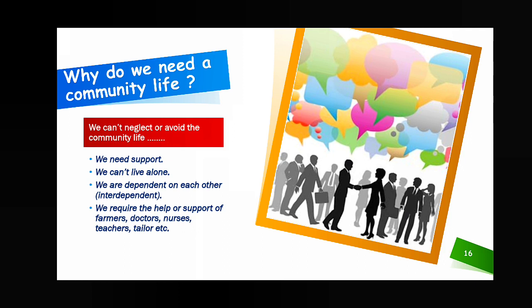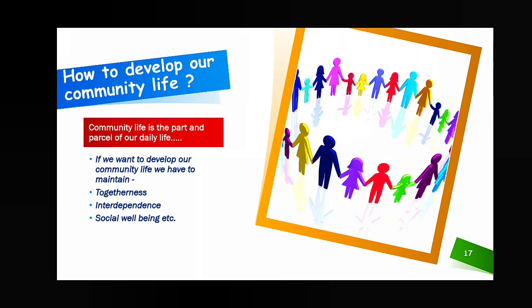Why do we need community life? Because we cannot live alone and cannot fulfill all our demands by ourselves — we need the support of many people from different professions. That is why we live in a community. To develop our community life, there are three things we must maintain: togetherness — no selfish thinking, always the feeling of 'we'; interdependence — you take help and also give help when required; and social well-being — doing good activities to support others in society.